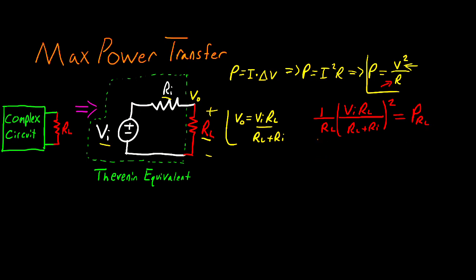So before we start taking derivatives let's simplify this a bit. We can write that the power in RL is equal to 1 over RL multiplied by VI squared RL squared and in the denominator I'll have RL squared plus 2RL RI plus RI squared. Now I can cancel this RL and this is a little bit easier to work with.